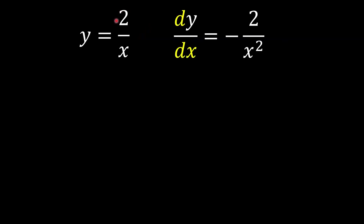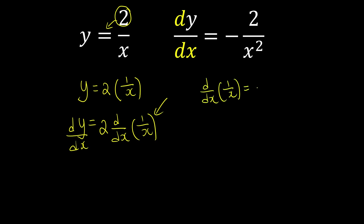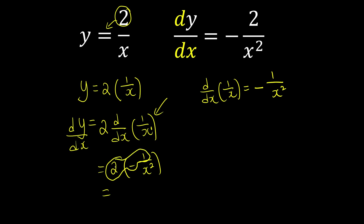What if the numerator is no longer 1? We're going to write it as y equal to 2 times 1 over x — just take out the constant first, then proceed with differentiation. So dy over dx equals 2 times the derivative of 1 over x. Using the faster pattern method: the derivative of 1 over x is negative 1 over x squared. So we have 2 times negative 1 over x squared, and multiplying gives us negative 2 over x squared.